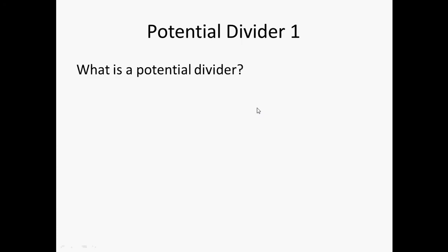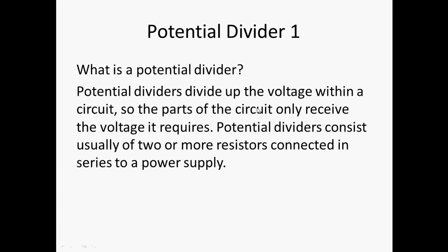Let us define the term potential divider. Basically, a potential divider divides up the voltage within a circuit so that parts of the circuit only receive the voltage it requires. The potential dividers consist usually of two or more resistors connected in series to a power supply. So the key word of a potential divider is that it divides up the voltage within a circuit because certain parts of the circuit only receive a small portion of the voltage to function. Another key word is that it consists of resistors that are connected in series.